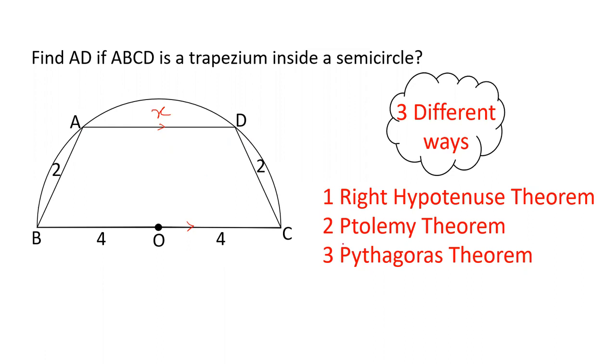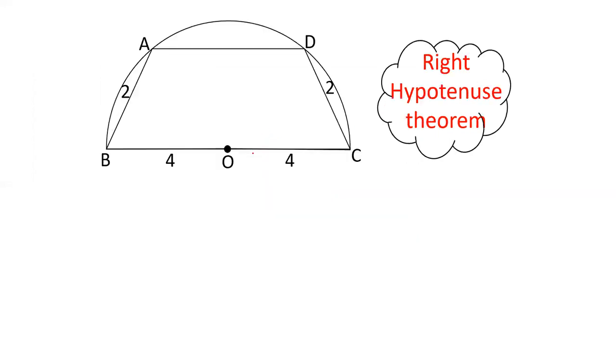I will tell you about 3 different methods. The first is right hypotenuse theorem. The second is Ptolemy's theorem. The third is Pythagoras theorem. Let's start our first method. The first is right hypotenuse theorem. The theorem is this way.